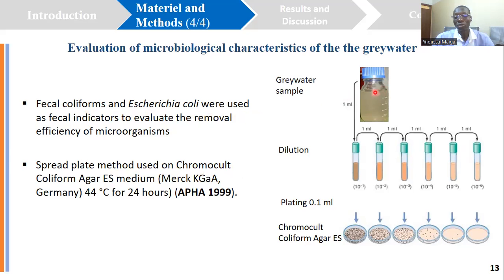The sample was diluted, and 0.1 milliliters was plated on a chromogenic coliform agar medium. This is a specific medium that allows the growth of E. coli and fecal coliform. As it is a chromogenic medium, we can distinguish between fecal coliforms and E. coli.